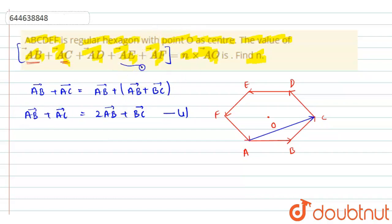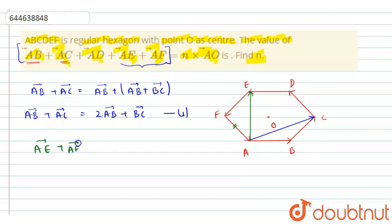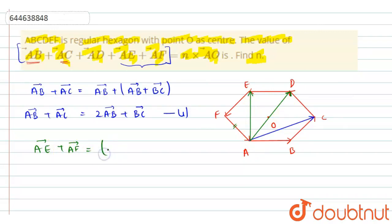Next, let's talk about AE vector and AF vector. This is AE vector and this is AF vector. For AE vector plus AF vector, using the triangle law in triangle ADE, we can write AE vector as AD vector plus DE vector.